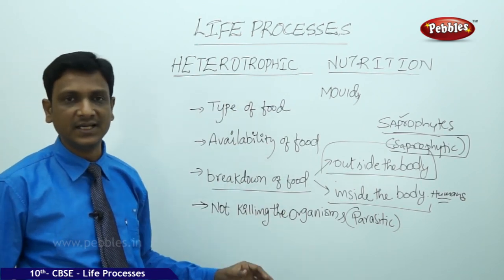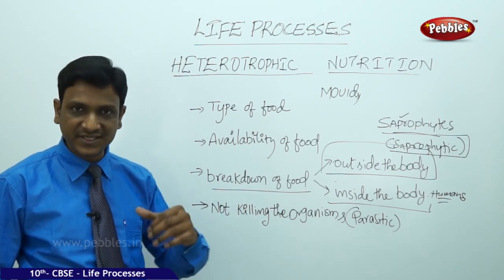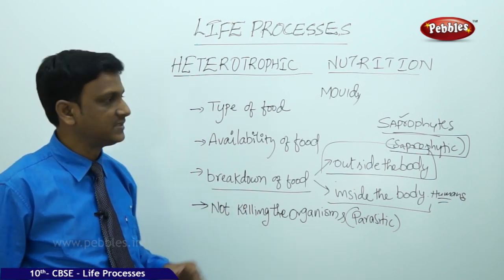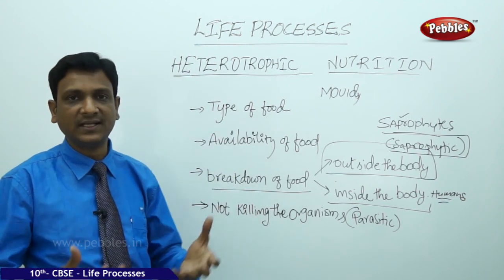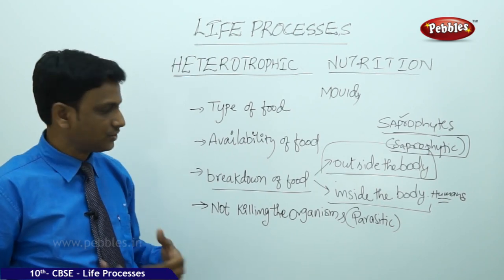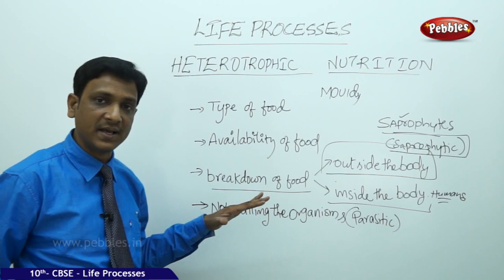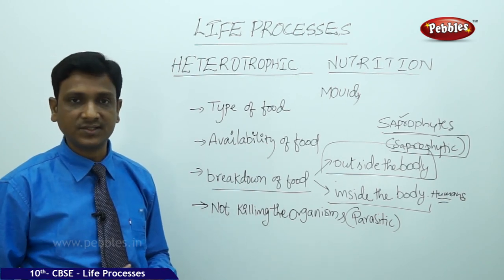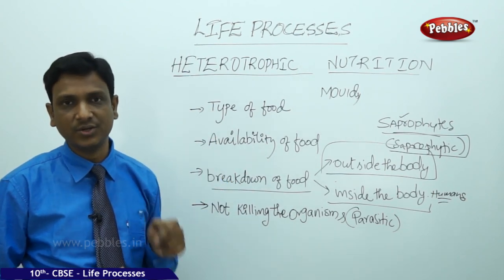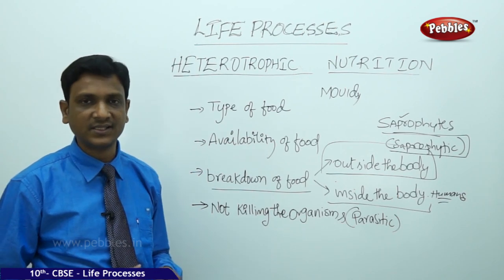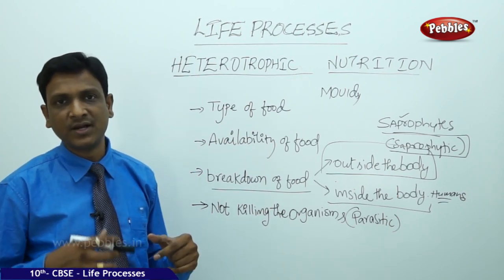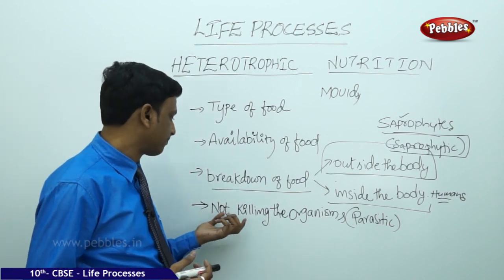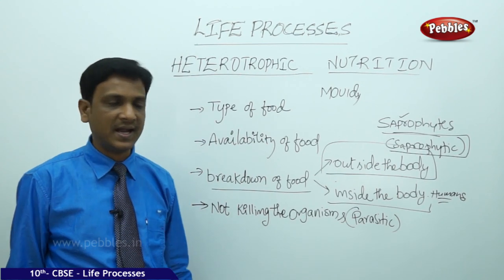There is one more kind of nutrition — parasitic mode of nutrition — which also comes under heterotrophic nutrition. Here organisms do not kill the other organism; they just feed on it. We can find certain plants and animals under this category. Under parasitic plants, cuscuta is an example — it has a special structure called haustorium by which it sucks juices from other plants, feeding on them without killing them. This is an example of a parasitic plant.